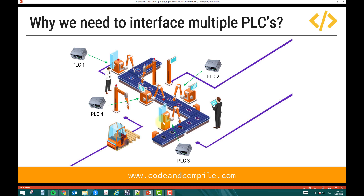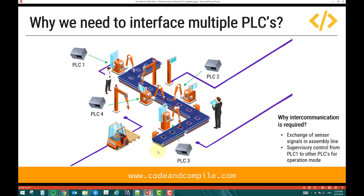Sometimes these robots have to work together, so they need to share information. One way you can do it is with a PLC. So this is just a basic example that in an assembly line we might need to exchange information. We can say that exchange of sensor signals in an assembly line is why we need intercommunication or supervisory control from PLC1 to other PLCs.